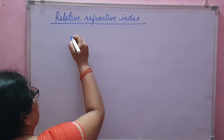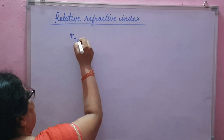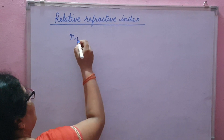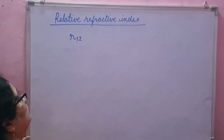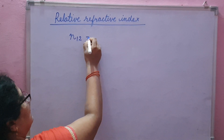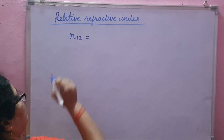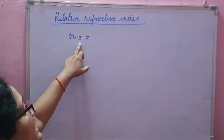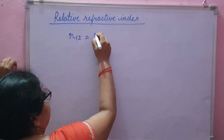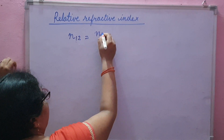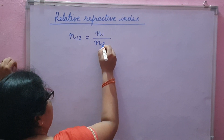Relative refractive index means the refractive index of any medium 1 with respect to medium 2. This refractive index of medium 1 with respect to medium 2 is the ratio of refractive index of medium 1 upon refractive index of medium 2.